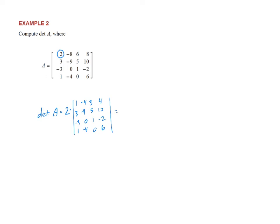Now I can use row replacements without changing the determinant. I'll use the 1 in the top row to eliminate everything below it. Doing −3 × row 1 + row 2 gives 0, 3, -4, -2. Doing 3 × row 1 + row 3 gives 0, -12, 10, 10. Negating row 1 and adding row 4 gives 0, 0, -3, 2. The determinant hasn't changed; we're putting it into echelon/triangular form so I can multiply along the diagonal.